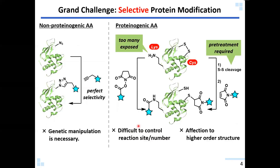Conventional conditions often target reactive side chains, especially the amine of lysine or the thiol of cysteine. However, lysine is too many — exposed too broadly on the surface of proteins. As a result, it is difficult to control the modification number and positions.